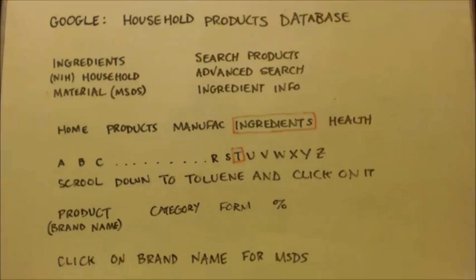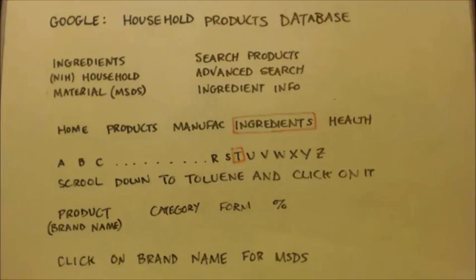Then you can click on the brand name to see the MSDS and check the percentages of other things in that same product — to see if it's even viable to try to get the toluene out. It might not be worth it even if there's a lot in there, if it's mixed with something that's hard to separate. Then you just move on to the next product that has a high percentage.